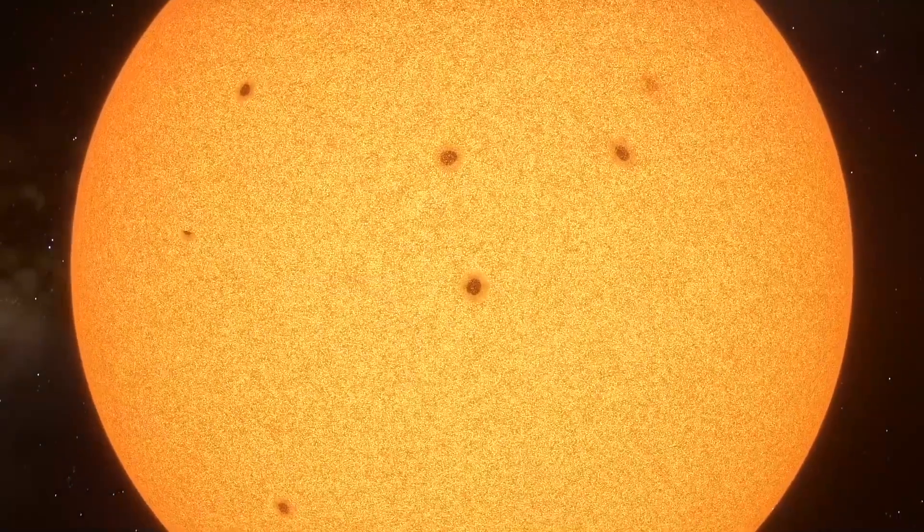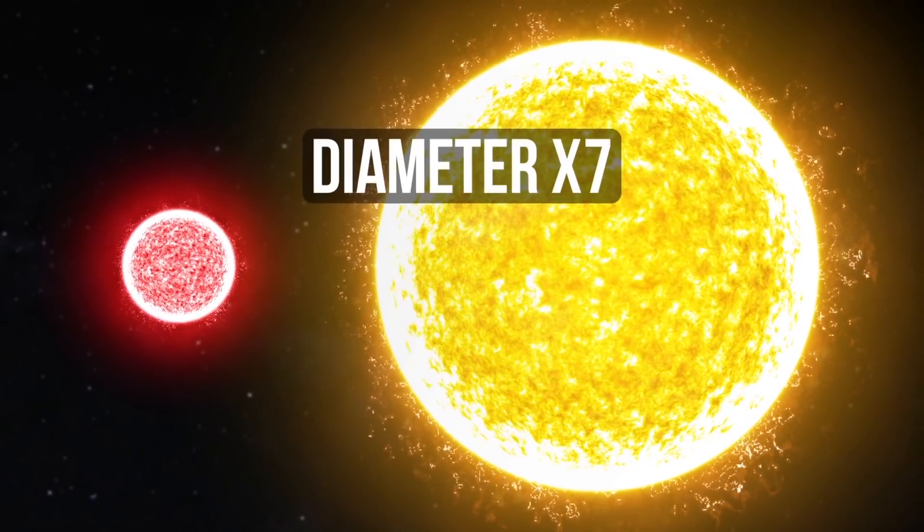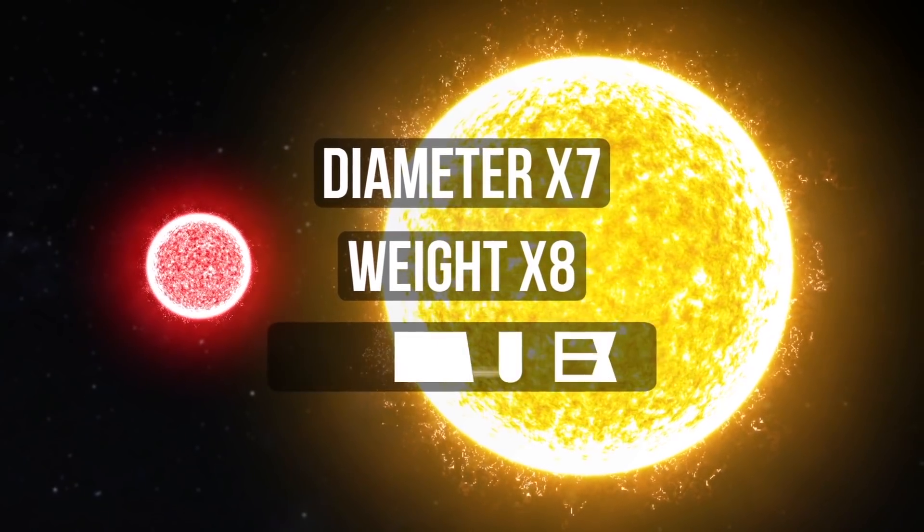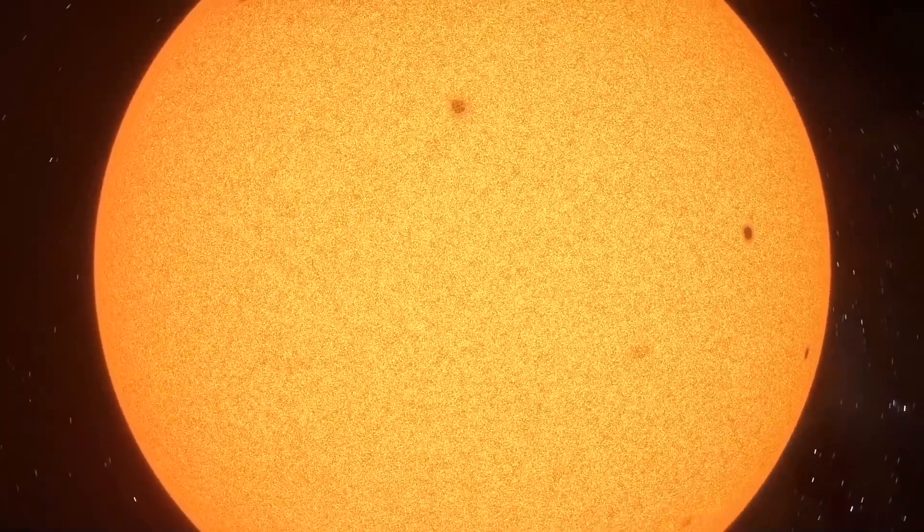Proxima Centauri is a red dwarf. Compared to our Sun, its diameter is seven times smaller. It's also eight times lighter, and its temperature half that of our Sun. Looks relatively modest, but you could settle down nearby.